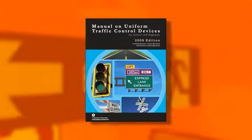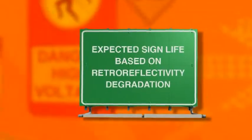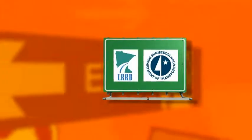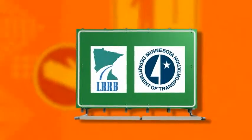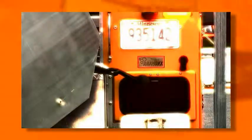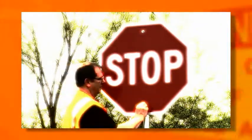The Federal Manual on Uniform Traffic Control Devices requires public agencies to use an assessment to maintain traffic sign retro-reflectivity standards. One of these management methods is expected sign life, which can be based on sign retro-reflectivity degradation. The Minnesota Local Road Research Board is funding a project to develop expected sign life values for traffic sign materials commonly used in Minnesota, based upon retro-reflectivity data collected in the field. The results will enable local agencies to manage their traffic sign assets better and decrease their costs through more efficient sign replacement strategies.